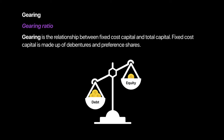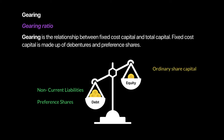Gearing essentially measures the ability of a firm to pay its long-term obligations — specifically, what amount of the company was financed by equity (ordinary shares) and what amount was financed by debt. Gearing measures the relationship between fixed cost capital, which is your debt, and equity. Debt here refers to non-current liabilities and preference shares, which include loans and debentures. Preference shares also carry a fixed dividend, making them fixed cost capital.